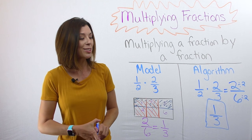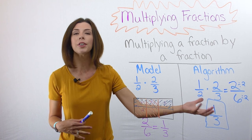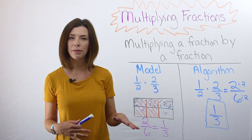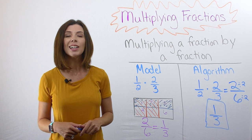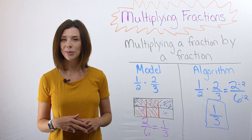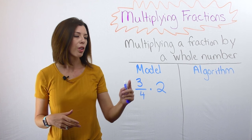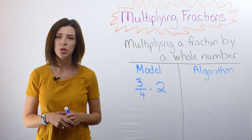Obviously I get the same answer either way, but it's really important to understand where that's coming from and be able to draw the model. Let's look at a fraction times a whole number now. First let's start by looking at the model three-fourths times two.